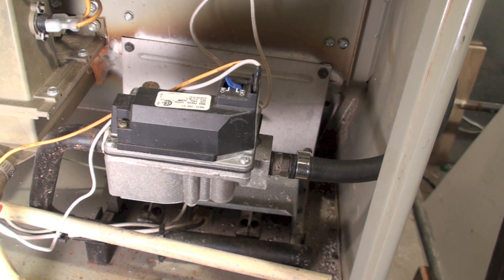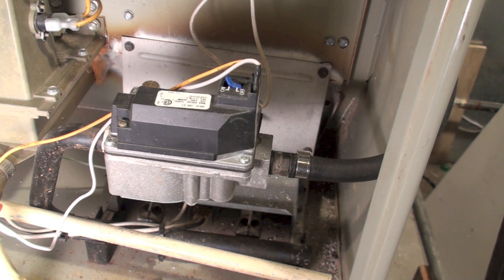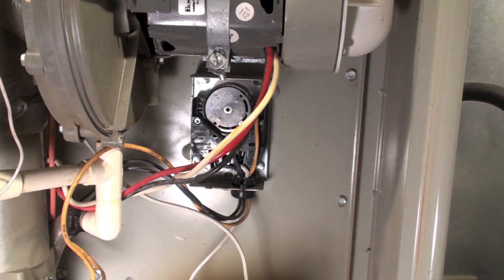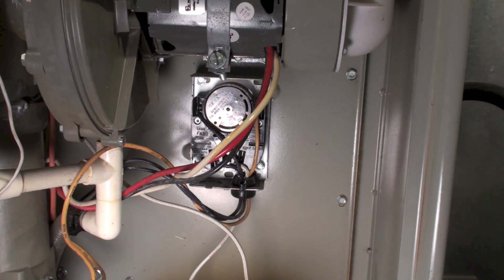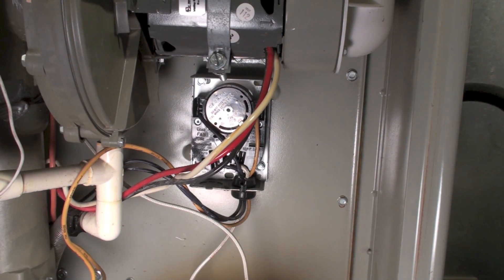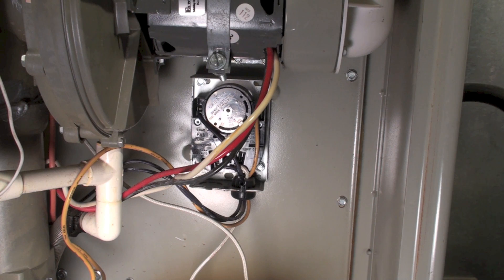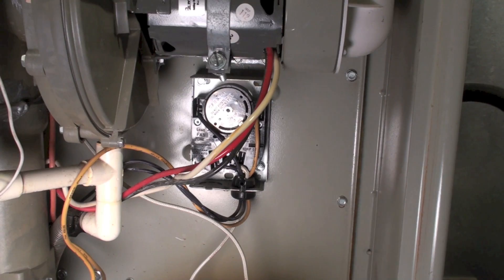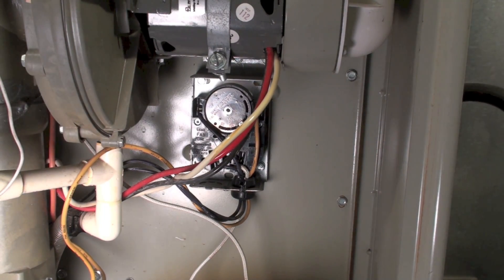Now we have our burners on, and we've got a heat-operated fan switch, just like on the older furnaces. The heat-operated fan switch has to warm up and turn on the circulating fan. That's pretty much the sequence on this thing. We'll dig into the burners and some of the other things in later videos.